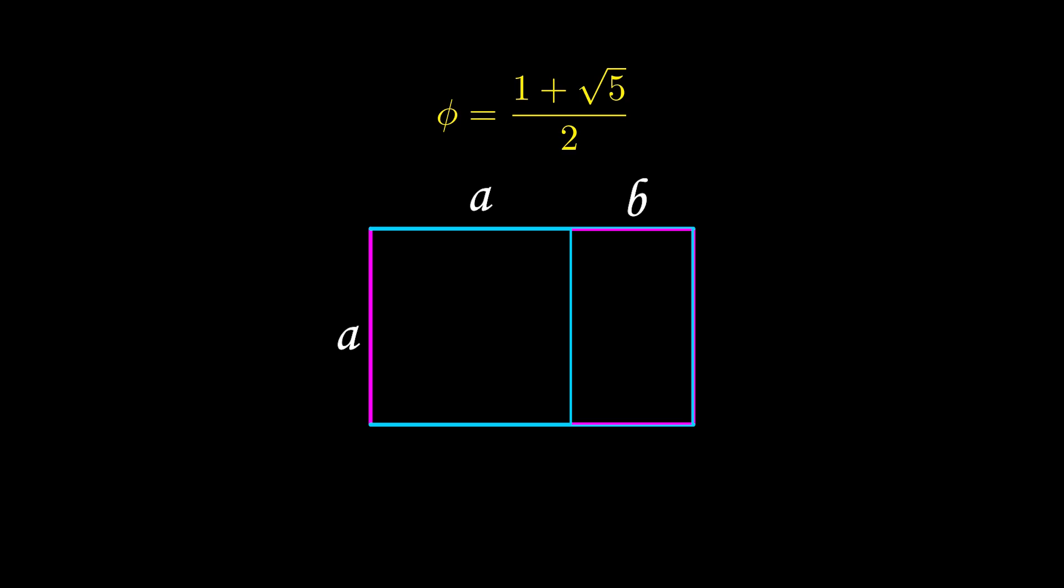Because the rectangles are similar, they must have side lengths in the same ratio. So that means a plus b divided by a must be equal to a divided by b. We can divide the left-hand side through by a, and we'll have 1 plus b over a is equal to a over b. Now, a over b is our golden ratio. We're going to use the Greek letter phi to represent that, and the left-hand side will then be 1 plus 1 over phi.